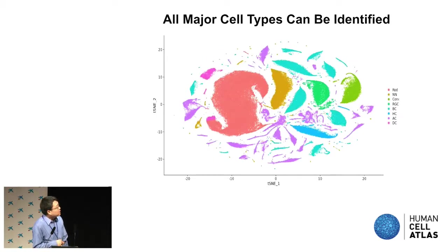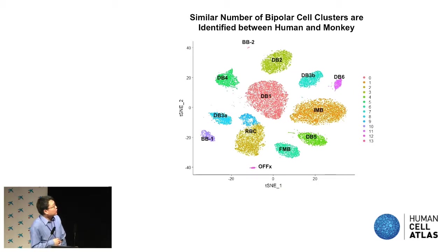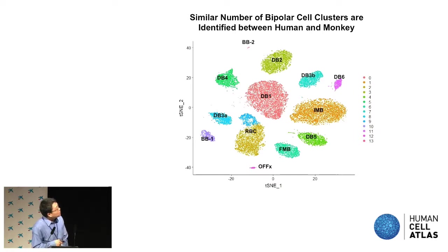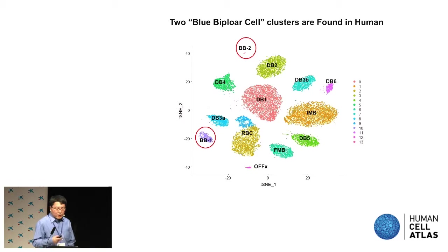We were able to easily classify those clusters into major cell types. Previously published primate and mouse data on the retina were used as guidance to annotate our clusters. Overall, they are quite similar between human and primate. For example, the bipolar clusters show 14 clusters that line up very well, and we can annotate their cell types reliably. But there are some differences — the blue bipolar cells are split into two clusters in human instead of one in the primate.